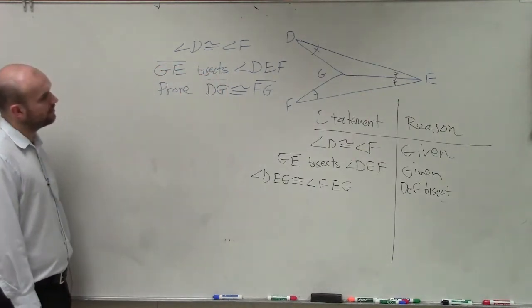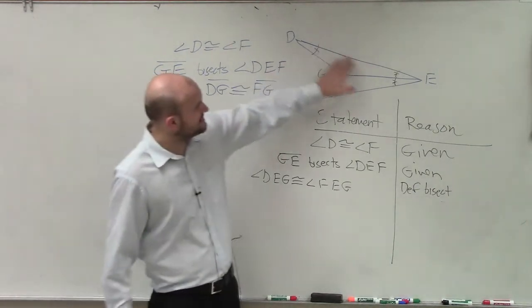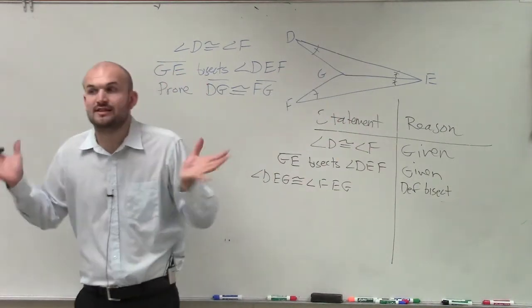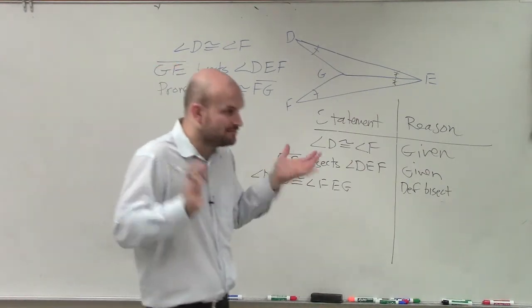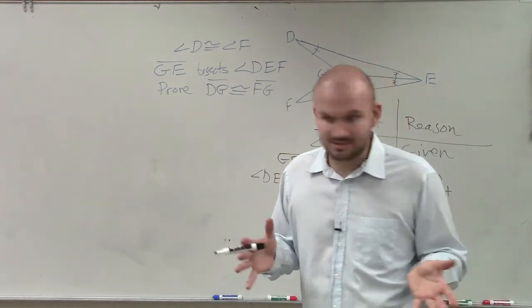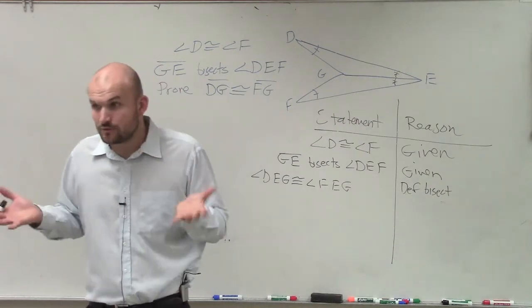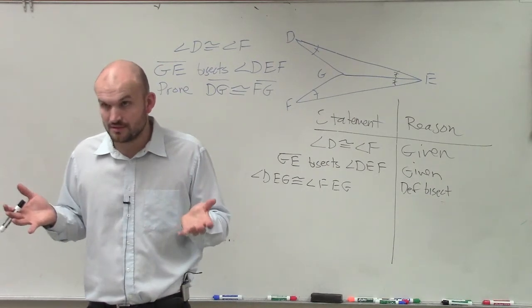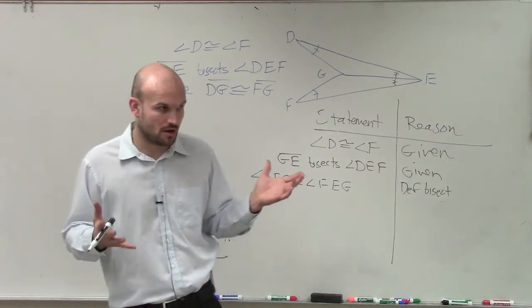But now what we need to do is we need to prove that DG is congruent to FG. The only way that we can prove that DG is congruent to FG is by proving that our triangles are congruent, because corresponding parts of congruent triangles are congruent. Right? If you have corresponding parts of congruent triangles, they're equal to each other.